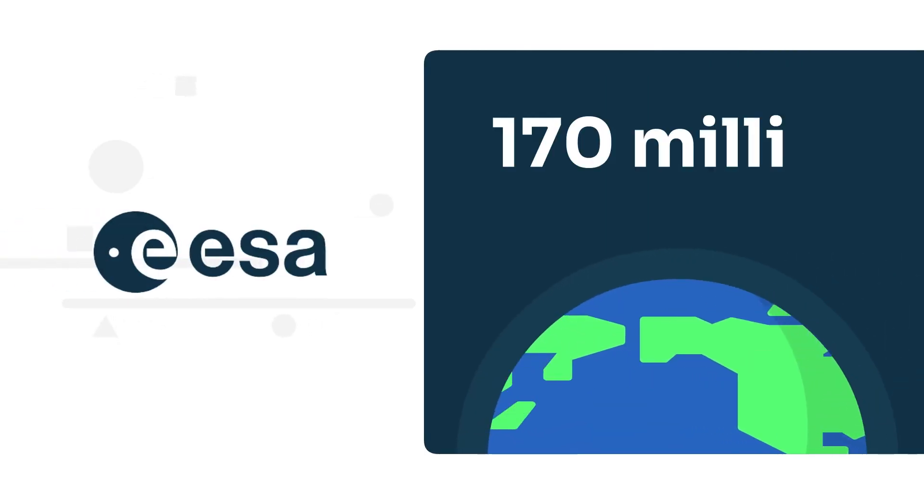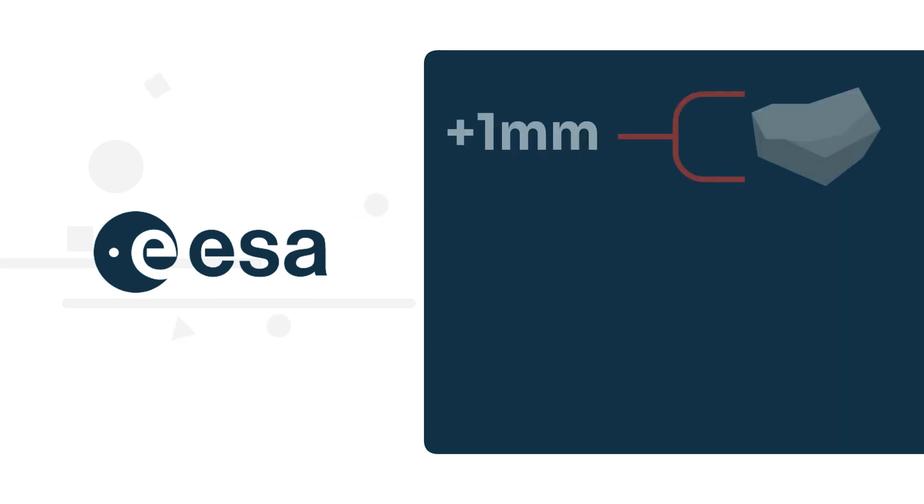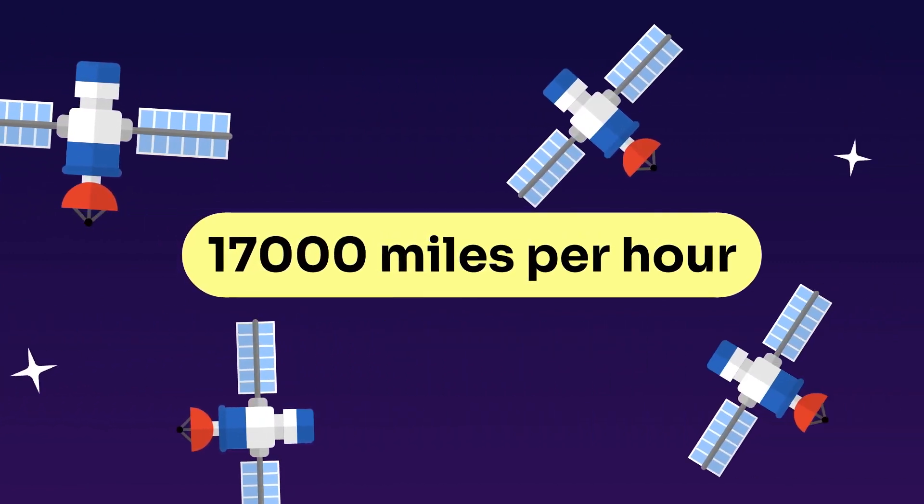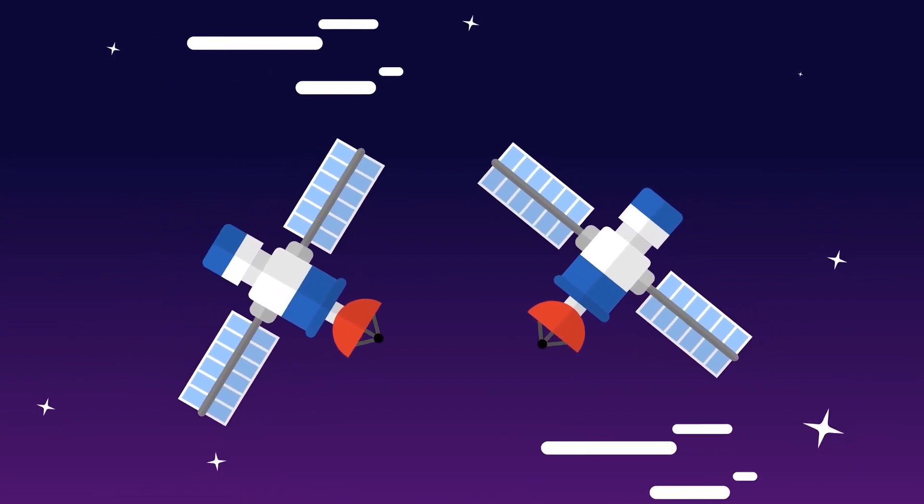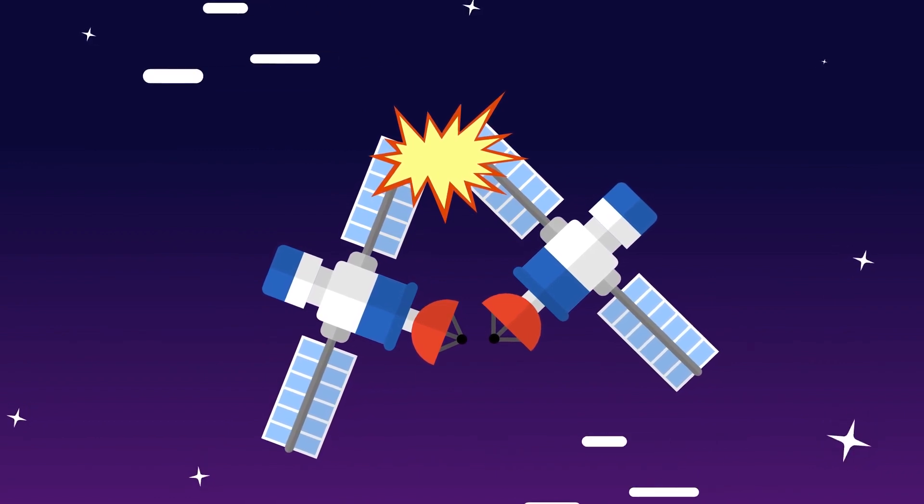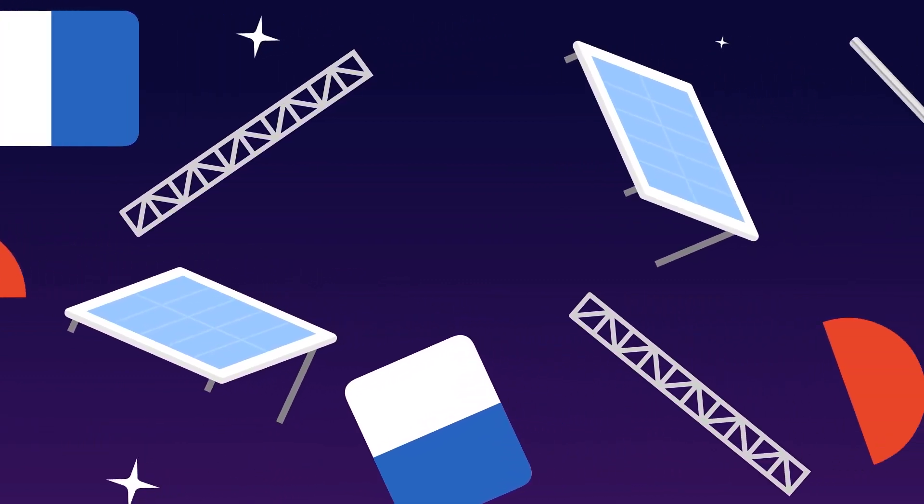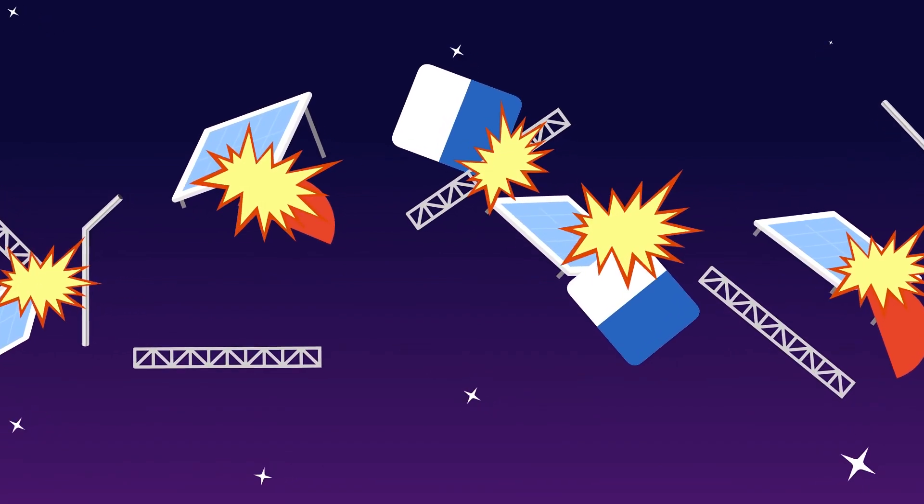The European Space Agency estimated 170 million pieces of space debris in orbit. These pieces are larger than one millimeter, and about 670,000 of these are larger than half an inch. Tens of thousands of satellites travel around 17,000 miles per hour. The chances of these satellites getting close to each other are a lot higher, and collisions between high-speed objects in orbit can create thousands of pieces of debris.